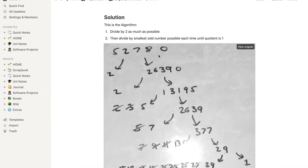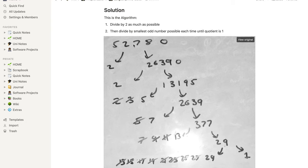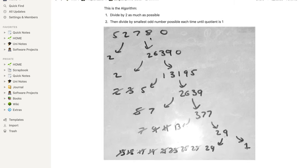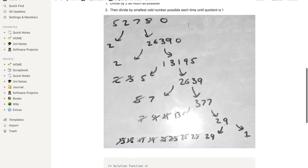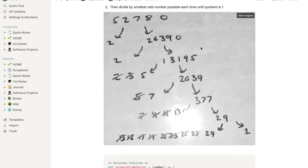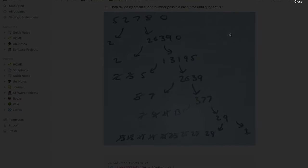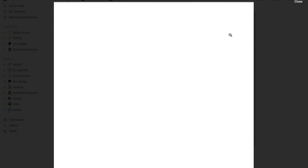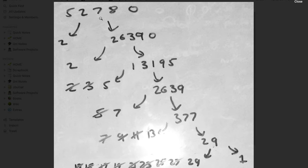The algorithm we're going to be using for the largest prime factor looks like this: we divide the number by 2 as much as possible, because 2 is the smallest prime number, and then we keep dividing by the smallest odd number possible each time. We do this until the quotient — the result of the division — is equal to 1. This isn't the most efficient algorithm but it is the simplest to understand. Let's say we have 52780.